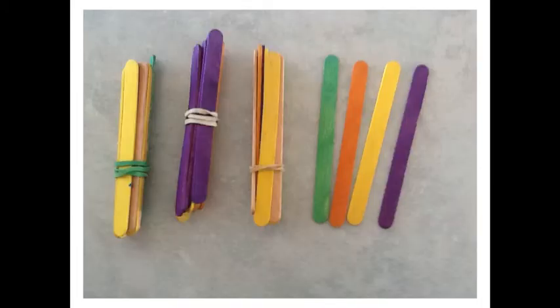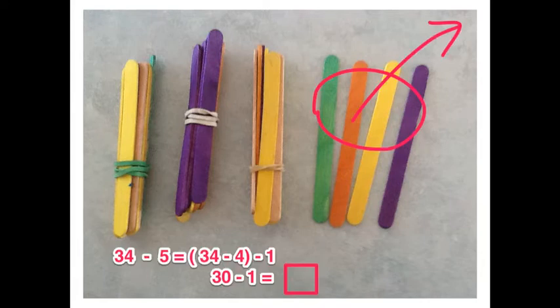Here I have 34 sticks and these are going to help me model my problem. I'm going to split this number 5 into first of all 4, and here is the part of the number sentence that shows what I do first. 34 take away 4, and then I'll still have 1 to take away